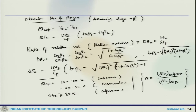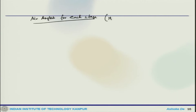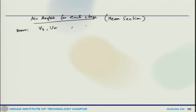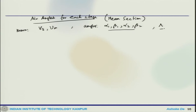Once the number of stages is calculated, one can calculate the air angles for each stage at the mean section. For a constant mean diameter with known axial velocity Vz and mean blade speed U, one can find angles alpha1, beta1, alpha2, and beta2 for each stage. The degree of reaction is also calculated to check whether it is in an acceptable range.